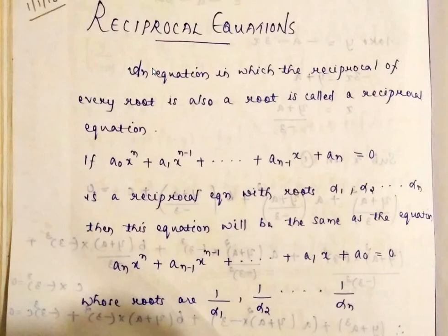For example, if you have a root of 2, then 1/2 is also a root. If 3 is a root, then 1/3 is also a root.